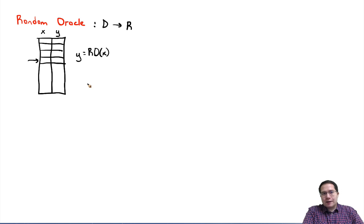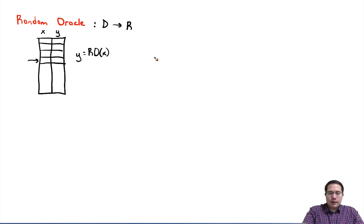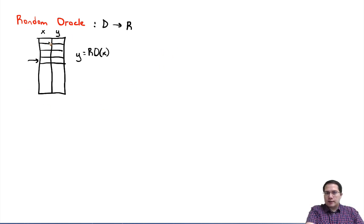This would be a perfect random oracle, but representing such a table requires exponential space. If the domain consists of m-bit values, then there are 2^n rows in this table. Instead, we are going to simulate this random oracle.